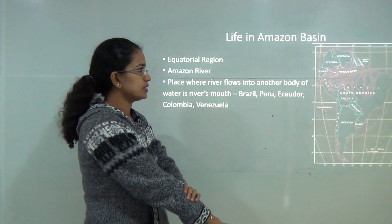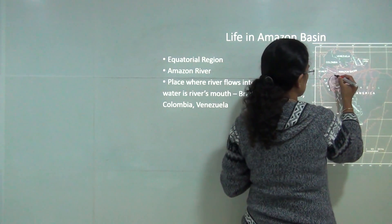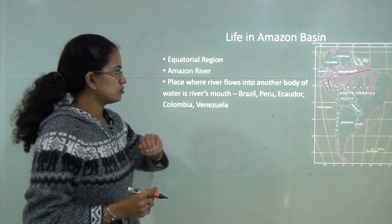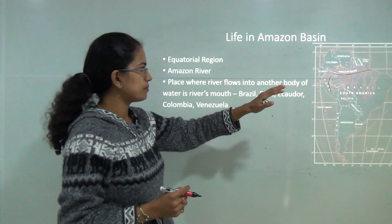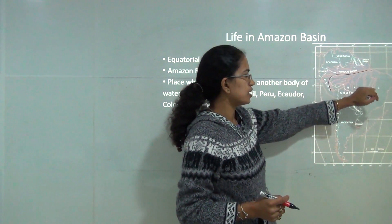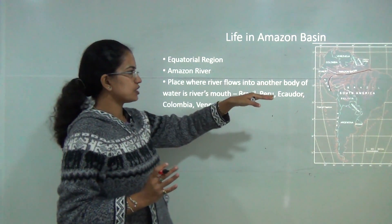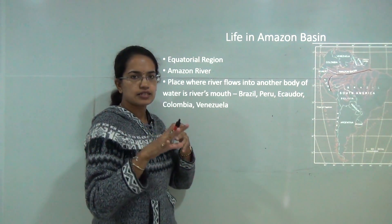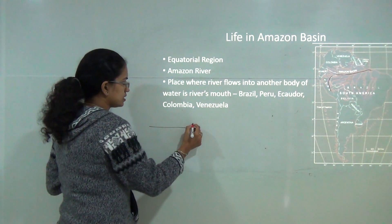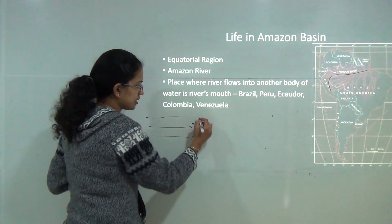The first topic is life in the Amazon basin. Looking at the map of South America, the Amazon basin is the area where the Amazon river flows. It covers most of Brazil, parts of Peru, Ecuador, Colombia and Venezuela. The place where the river flows into another body of water is known as the river mouth. This region is mainly an equatorial region — lying 10 degrees north and south of the equator.